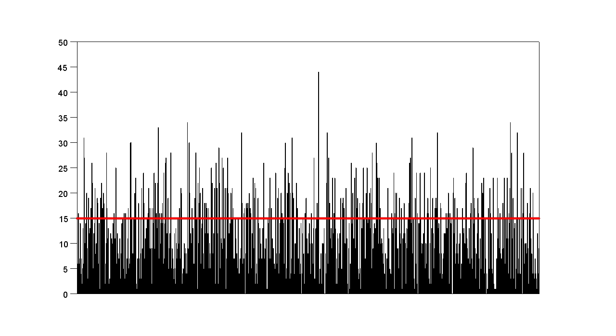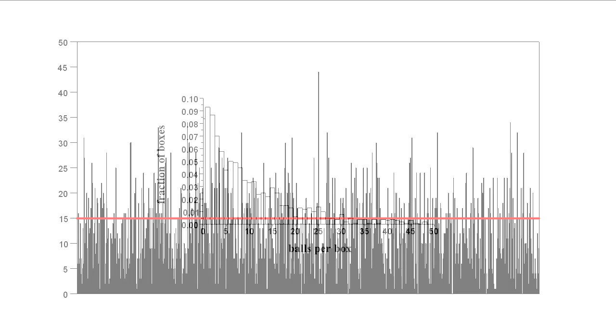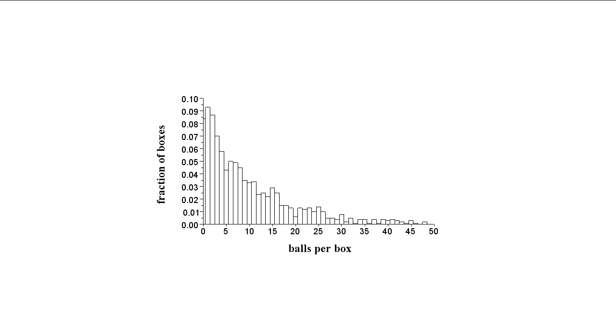We can do this for every possible number and display the results on a histogram, where the number of balls per box is shown on the horizontal axis, and the fraction of boxes with that many balls on the vertical axis. For the 15 balls case, we see that the fraction is about 0.03, or 3% of the boxes.